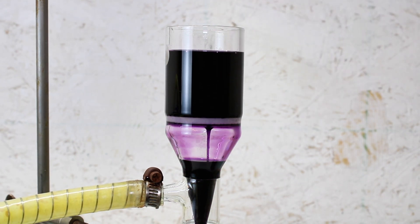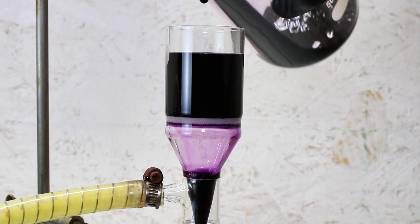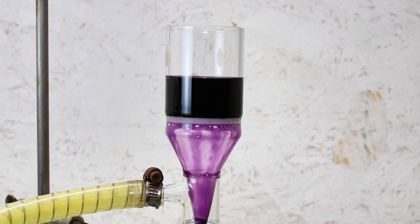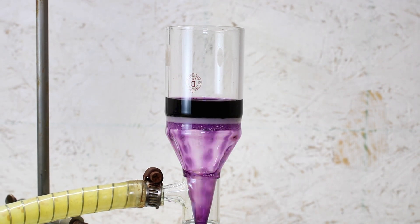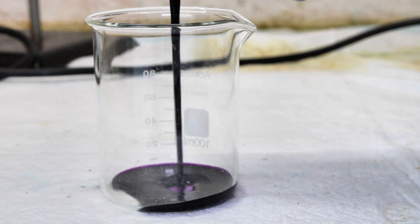Once most of the manganese dioxide has reacted to permanganate, I passed the mixture through a fritted funnel to remove any manganese dioxide that didn't react. The solution is sodium permanganate, which is the much more soluble cousin of potassium permanganate.